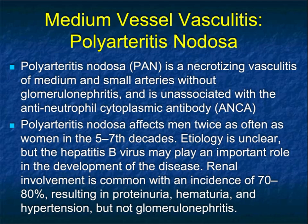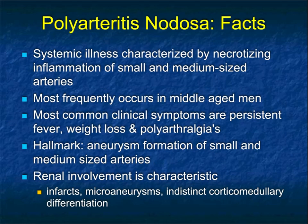While I showed you Takayasu's with the renal arteries, renal involvement in polyarteritis nodosa occurs in 80% of cases. It can result in proteinuria, hematuria, and hypertension. Patients with PAN often present with systemic disease, and you might be thinking about neoplasm or a process of unknown etiology.